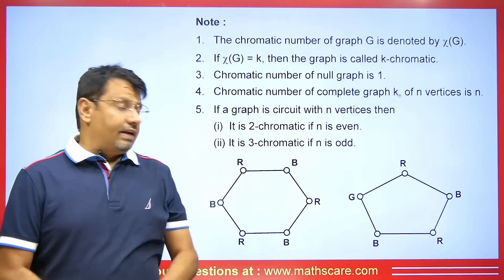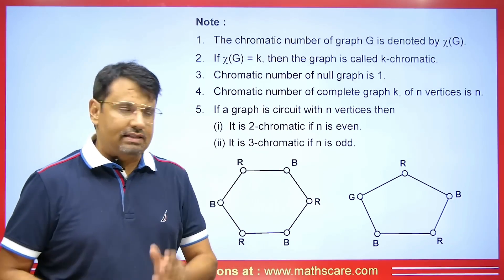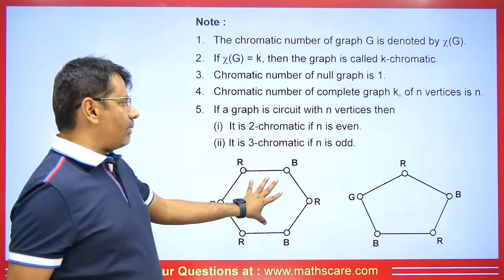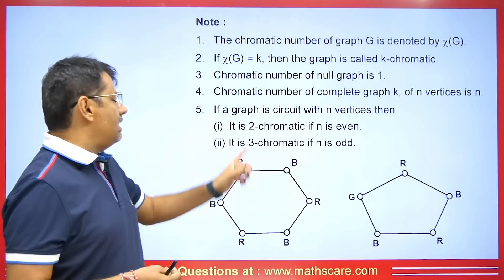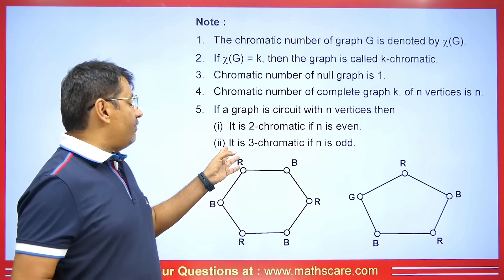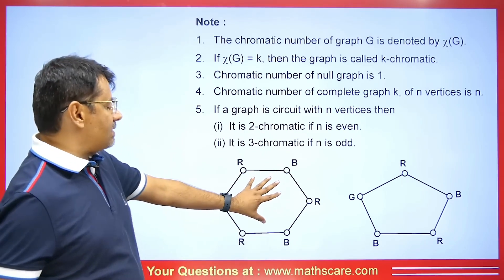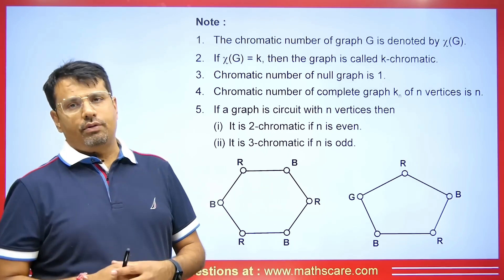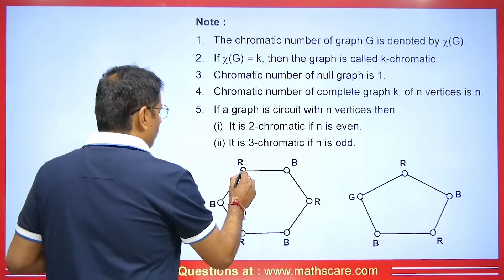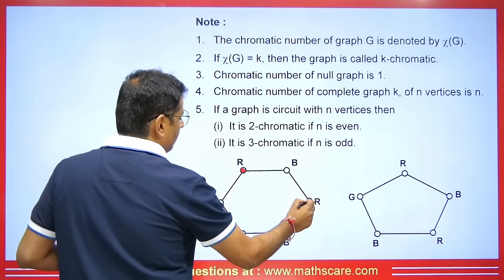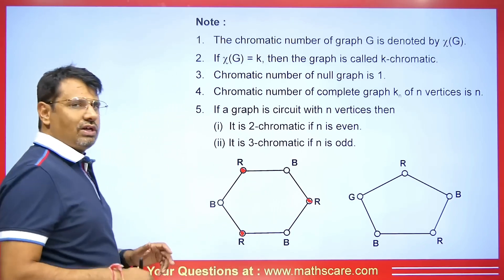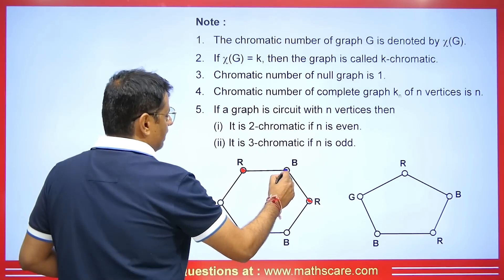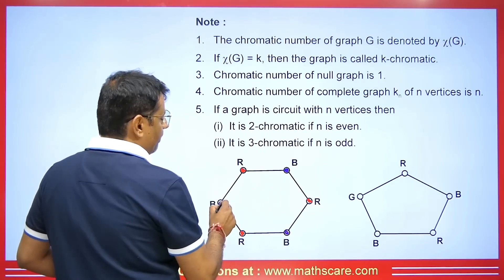If the graph is a circuit with n vertices, it is two chromatic if n is even, and three chromatic if n is odd. For example, with six vertices — an even number — the circuit graph is two chromatic. I color one vertex red, and I can also color non-adjacent vertices red since they are not connected. Alternating colors allows us to use just two colors, confirming this is a two chromatic graph.